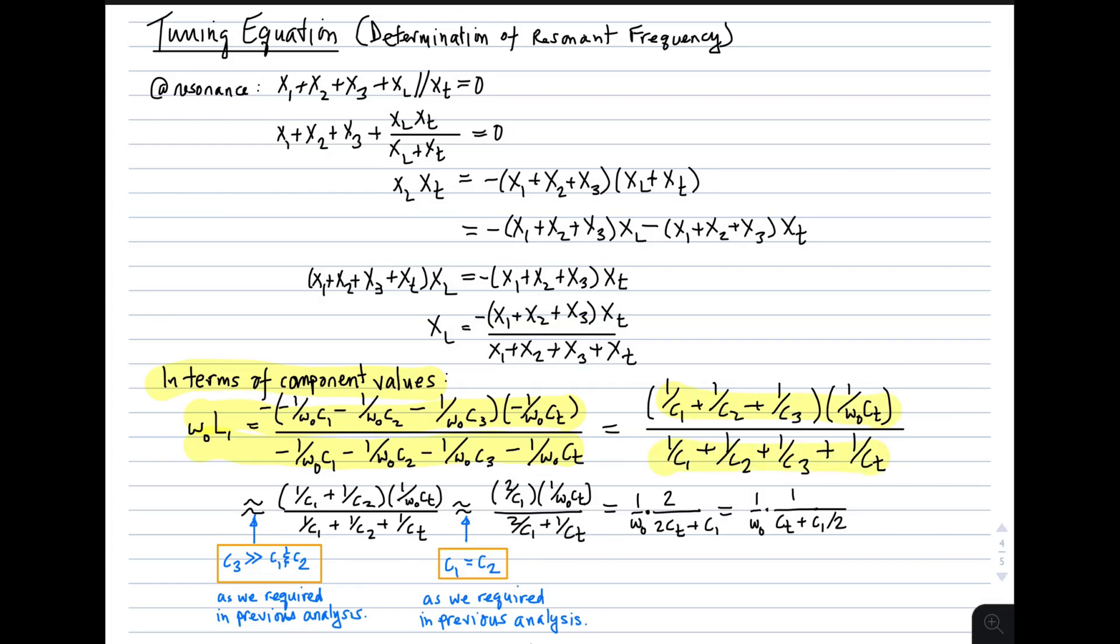Now in the previous analysis, we required that C3 be much much greater than C1 and C2. That simplified analysis. If we apply that here, the C3 disappears and we get this expression. And also in the previous analysis, we again for simplicity required C1 and C2 to be equal. So if we apply that simplifying assumption, then the expression simplifies to this. So we see dramatic simplification. A little bit of algebra gives us this, and then finally this.